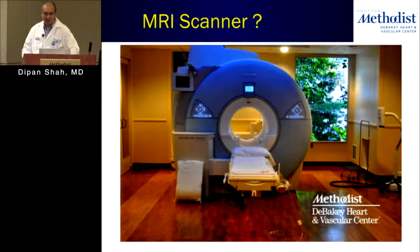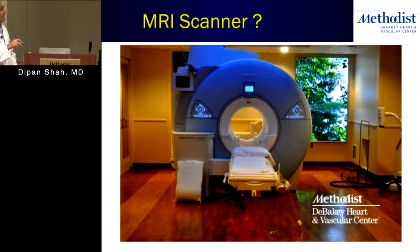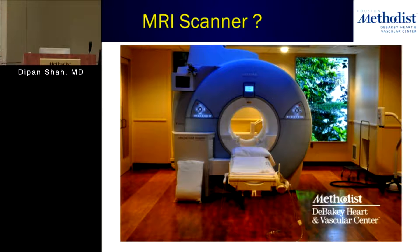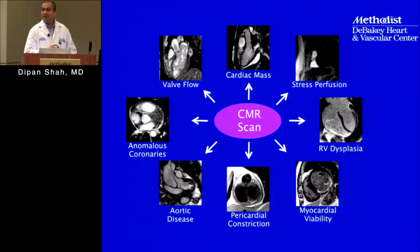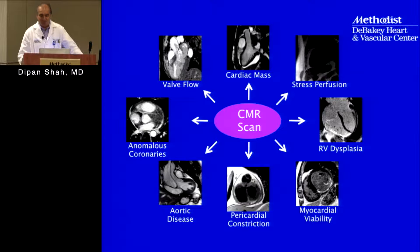This is actually a picture of our scanner over on main 2. You can see it's a donut-type machine with a table that the patient lays on. Once the patient lays on the table, we bring the table up and it goes into the center of the magnet — we call that the bore of the magnet. We can utilize MRI for a variety of different applications.